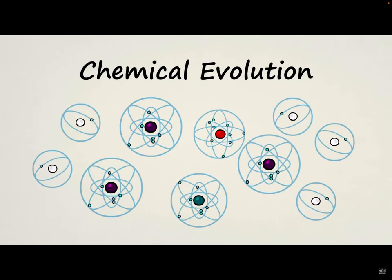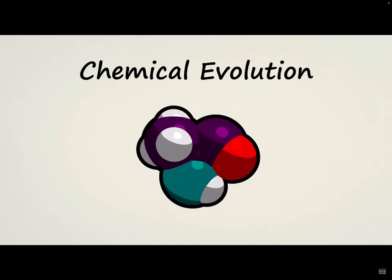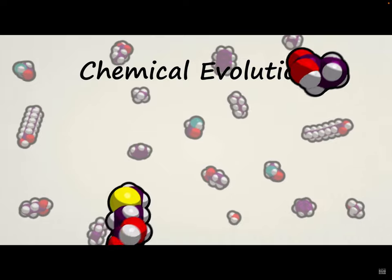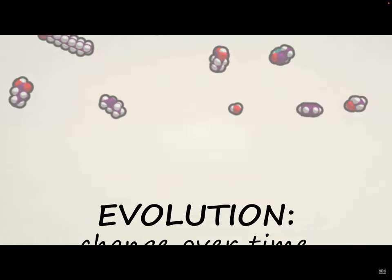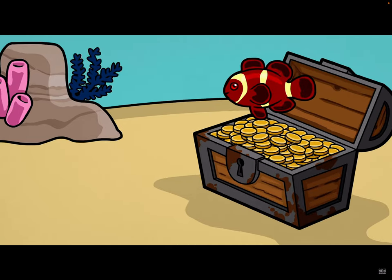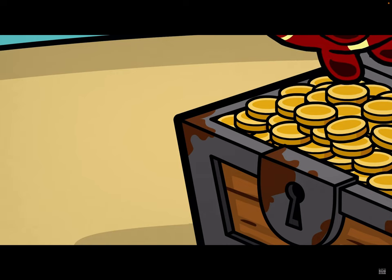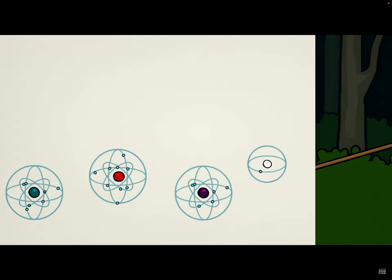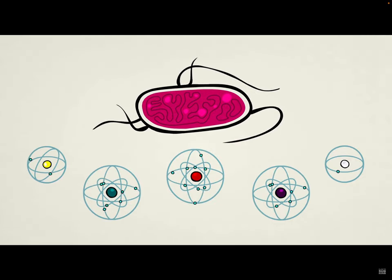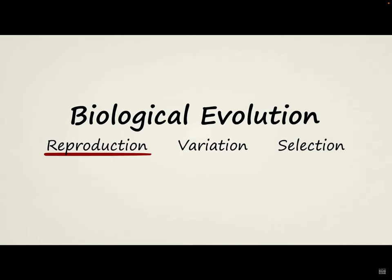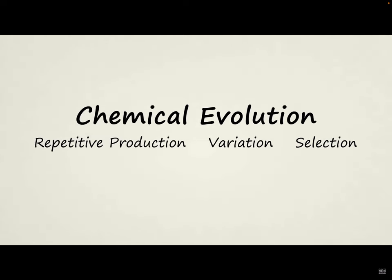Chemical evolution refers to changes in things that need not be capable of reproduction — individual molecules or entire chemical systems. Molecules and chemical systems almost always evolve or change over time, but they often evolve toward simplicity: solid iron corrodes into rust, proteins break down when exposed to heat. For simple chemistry to give rise to something capable of reproduction, chemical systems must be able to grow in complexity. This can happen through repetitive production — a much simpler process than reproduction.